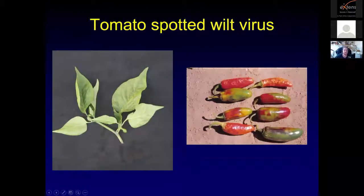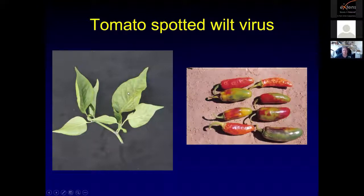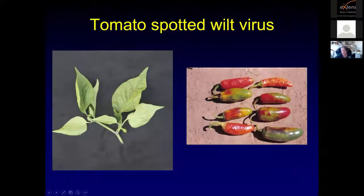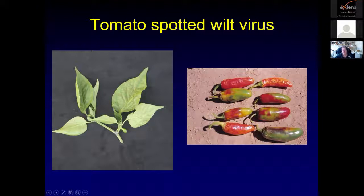On peppers you also get brown rings on the leaves. The ring spots are usually indicative that you have a viral infection. These jalapeno peppers infected with tomato spotted wilt virus show some rings, and you can also get that calico pattern of green, red, and orange on the fruit.